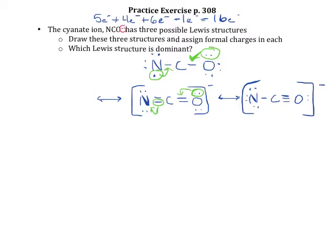I can also do the opposite, shifting the double bonds in the other direction — making nitrogen share more and giving one back to oxygen. This time nitrogen is triple-bonded while oxygen is single-bonded (N≡C-O). Nitrogen would only have one lone pair and oxygen would have three non-bonding pairs. Checking: nitrogen still feels like it has eight, carbon still feels like it has eight, and oxygen still feels like it has eight.